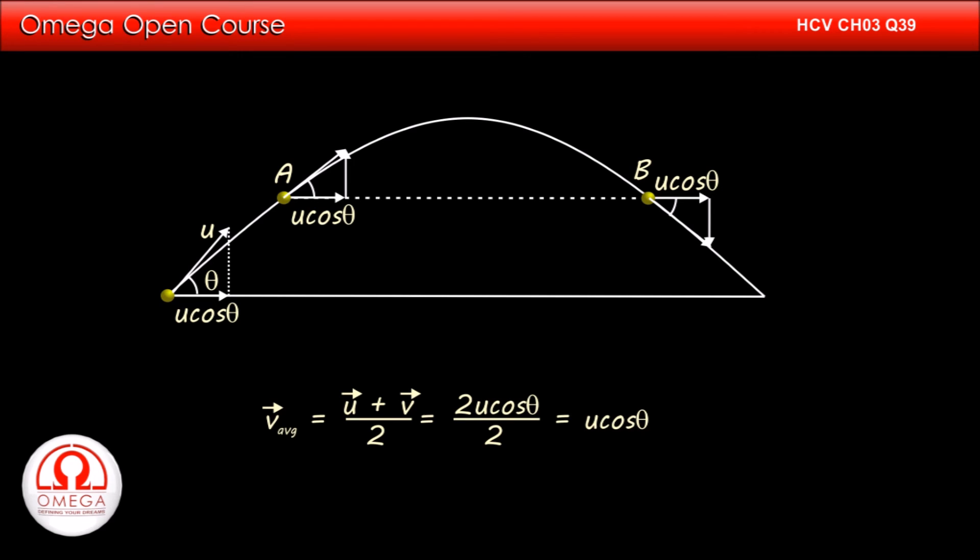Dividing this by 2, we get the average velocity. Thus, the average velocity is u cos theta.